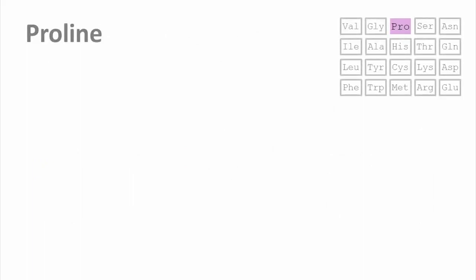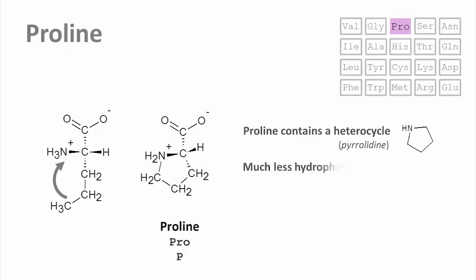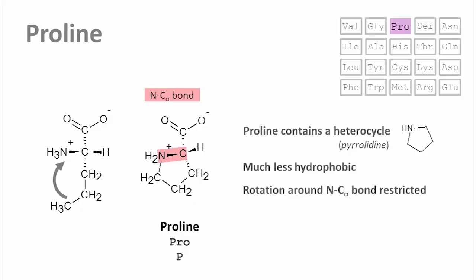Proline is one of a kind. We can imagine its structure as an aliphatic amino acid with a three-carbon chain, where the outer carbon atom forms a bond with the alpha amino group. This ring with one non-carbon atom is called a heterocycle; this particular one goes by the name of pyrrolidine. It is much less hydrophobic than the other aliphatic amino acids. Because of the ring structure, rotation around the N–C-alpha bond, which is central to the secondary structure of proteins, is restricted in proline. This has a unique effect on the conformation of the protein backbone, and proline cannot be accommodated in some types of secondary structures.